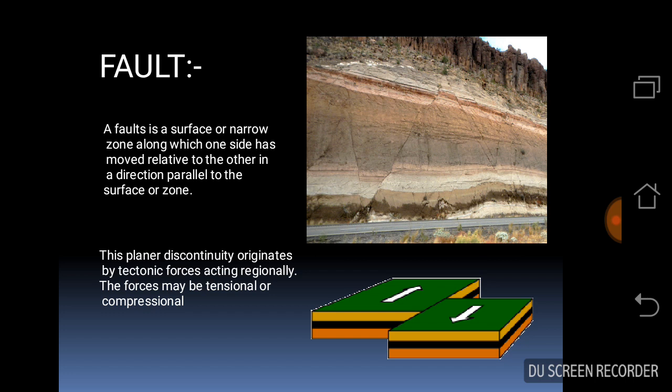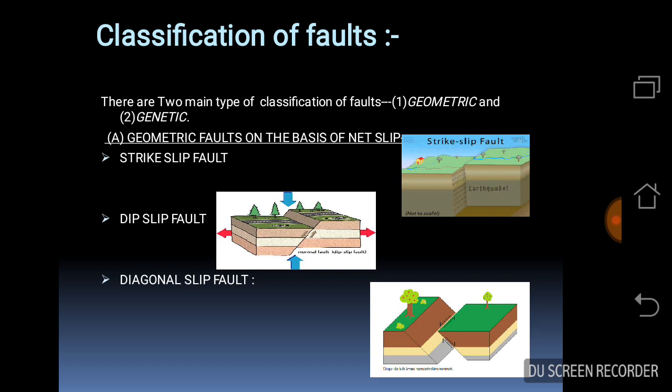Classification of faults: there are two main types of classification, that is geometric fault and genetic fault. On the basis of net slip, geometric faults are divided into three types: strike-slip fault, dip-slip fault, and diagonal-slip fault. In strike-slip fault, the net slip is essentially horizontal along the strike of the fault.